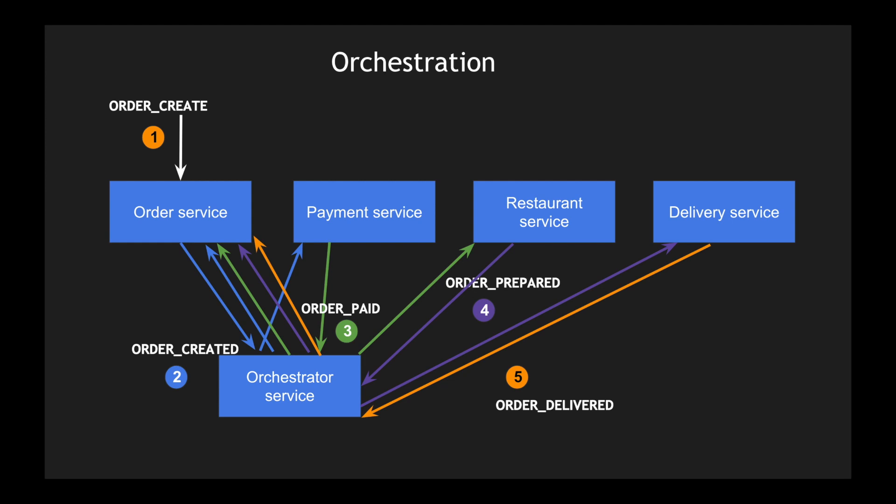In orchestration, a single service interacts with all microservices, but the orchestrator needs to know what each service does — which partially defeats the purpose of independent microservices. If the payment service changes, it might require changes to the orchestrator as well. It's up to you to decide which pattern to use based on your architectural use case. These are just two saga patterns — there are many more. In the next video, I'll try to implement this with an example using Eureka, Zuul, and Hystrix.